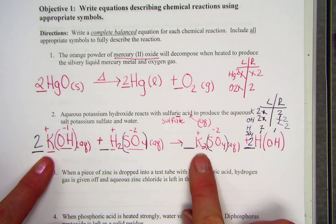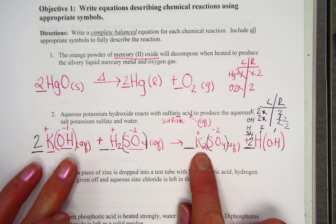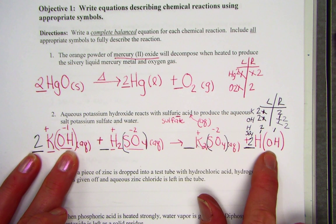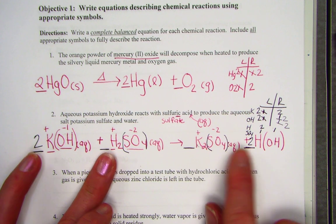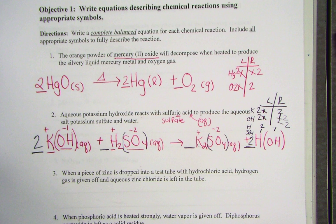Always good to check your work. Two Ks? Yep. Two OHs? Oh yeah. Two hydrogens, indeed. And one unit of sulfate balances this equation.